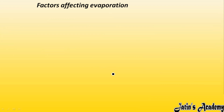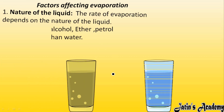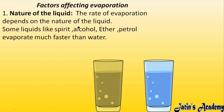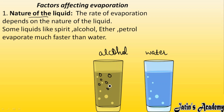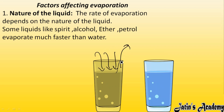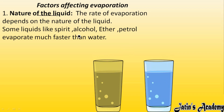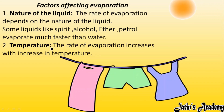Next we are having factors affecting evaporation. The first factor is the nature of liquid. For example, in one glass we have alcohol and in another we have water. In alcohol, the molecules are apart from each other and the intermolecular force of attraction is weak. But in water, intermolecular forces are a little bit stronger. So alcohol takes heat from the surroundings and evaporates much faster, while water does not evaporate as fast. So evaporation depends upon the nature of liquid.